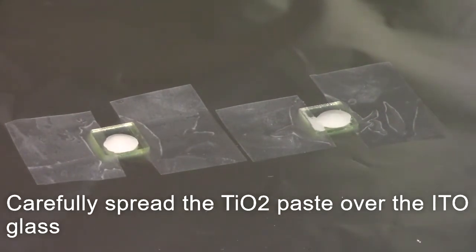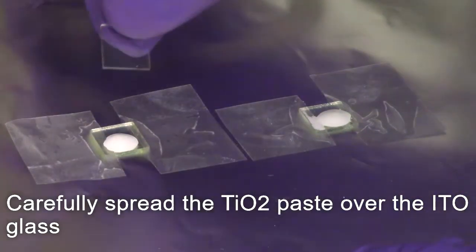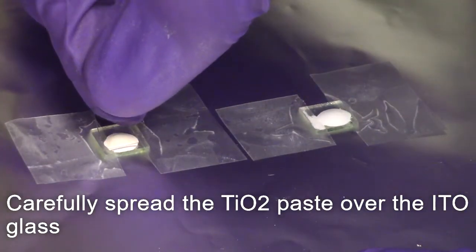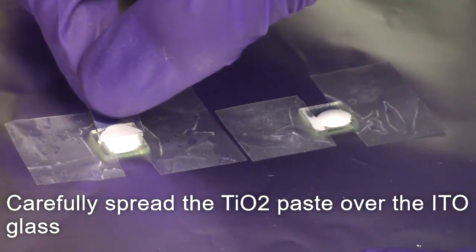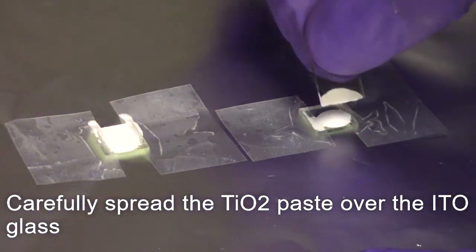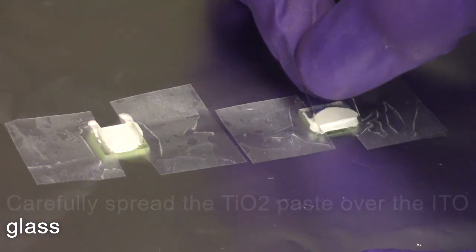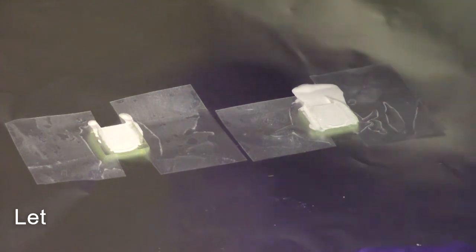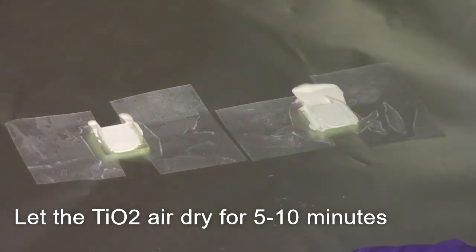Carefully, with a straight edge, spread the TiO2 paste over the ITO conductive side area. Now allow to air dry for 5 to 10 minutes.